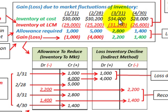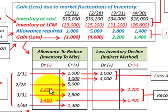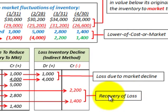For March 31st, the allowance required is $2,800 (difference between $34,000 cost and $31,200 LCM). The allowance account currently has a balance of $5,000. To bring it down to $2,800, we debit the allowance account $2,200 — the difference between $5,000 and $2,800. We then credit the loss on inventory decline for $2,200, which represents a recovery of the previously recognized loss.